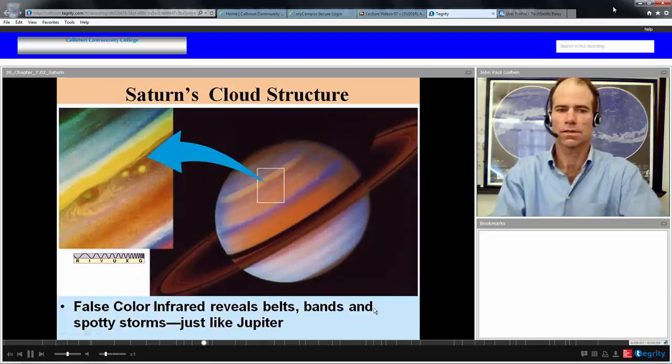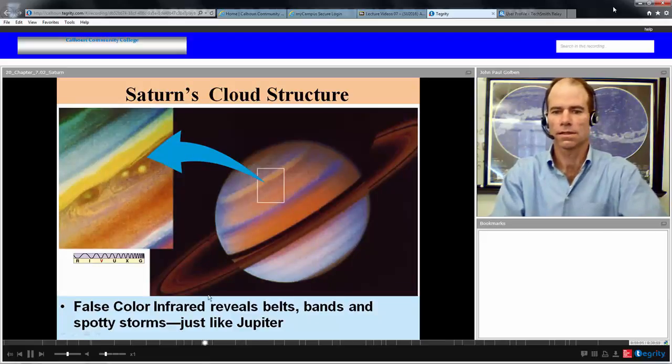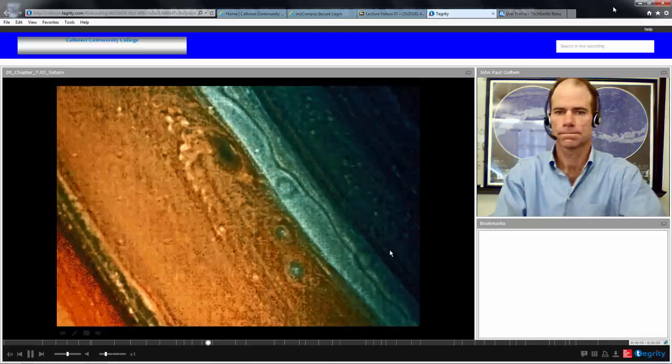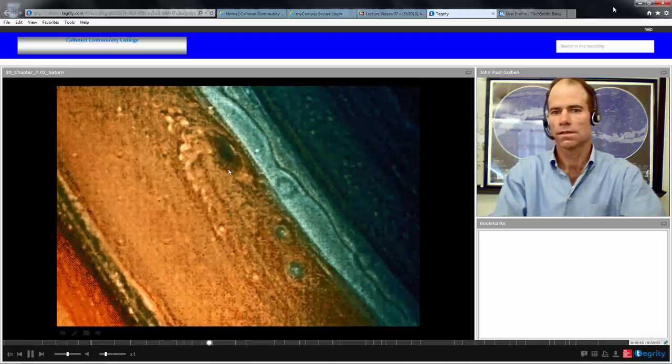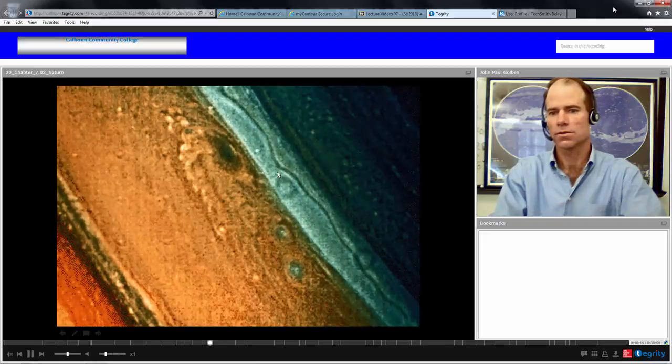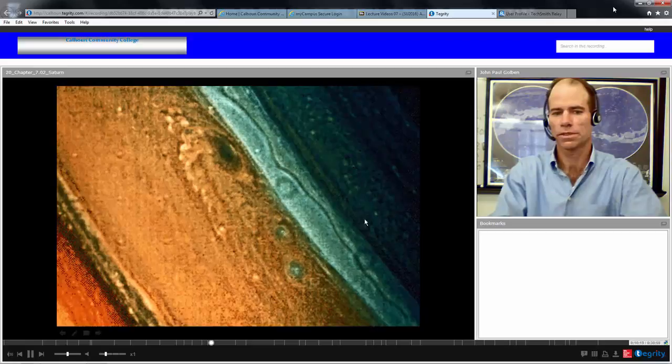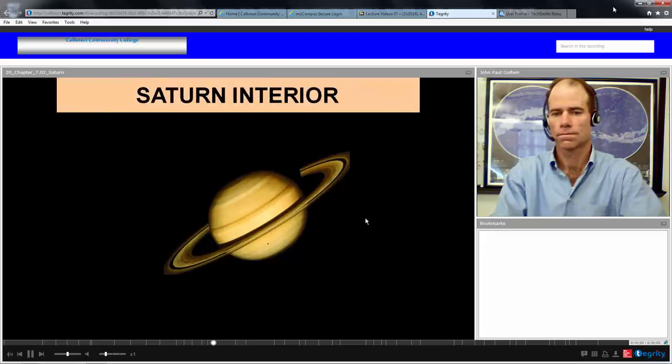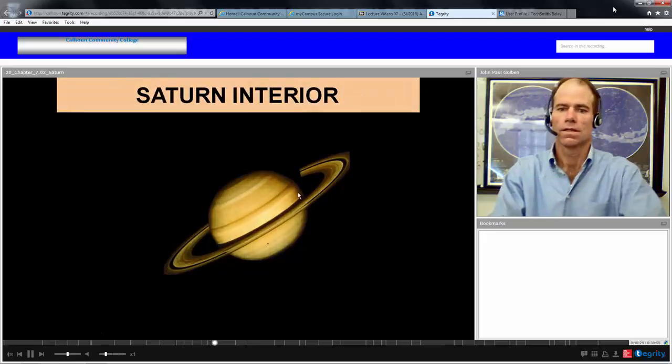Here's a nice picture using false color revealing with more detail the belts, bands, and spotty storms that are similar to Jupiter. Here's a closer look, some spotty storms and band-like structure. Very beautiful picture.